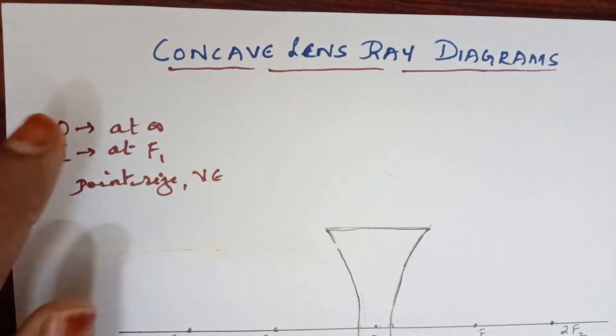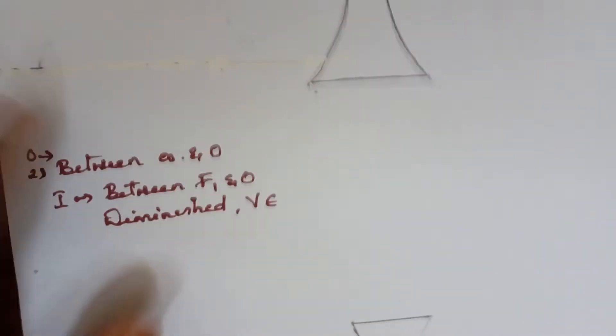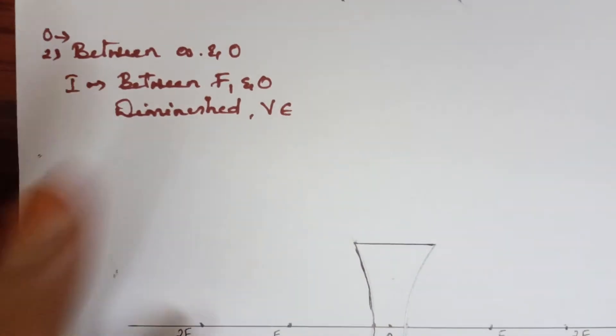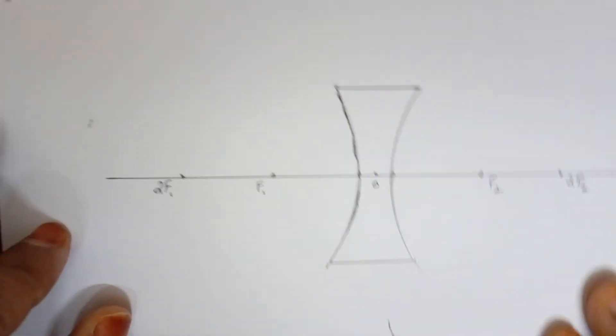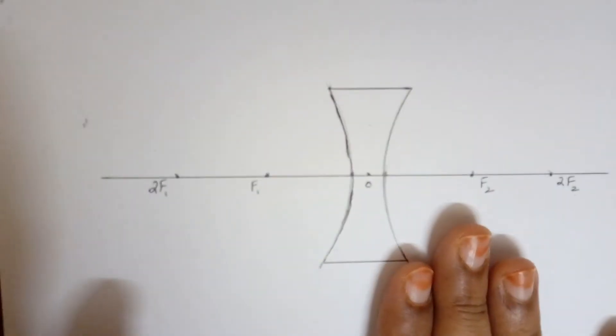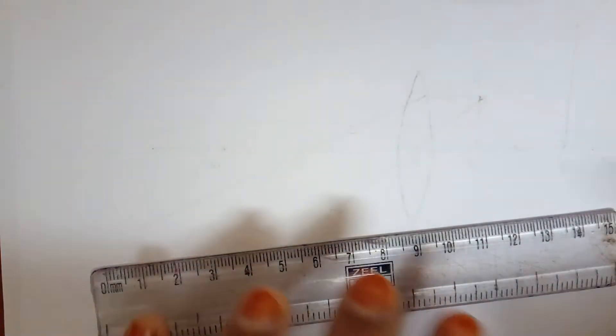So let's get started. In concave lens we have got only two illustrations: once when the object is at infinity and the second case when the object is between infinity and O. So before moving forward, let us learn how to draw the basic skeleton of concave lens.